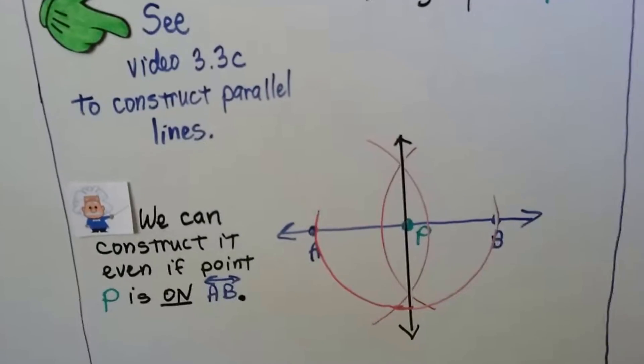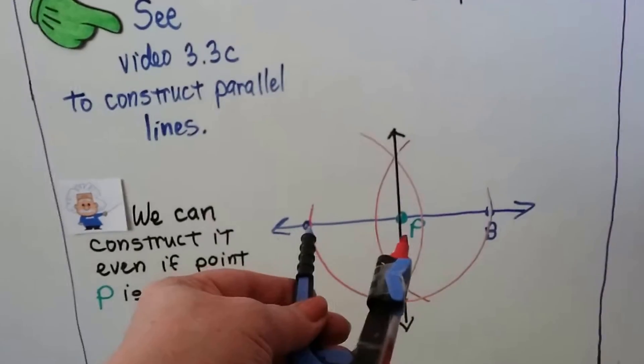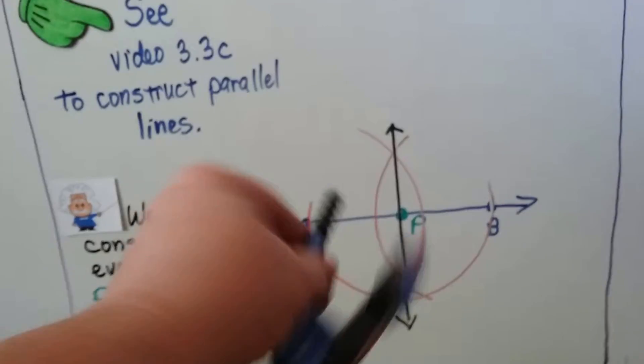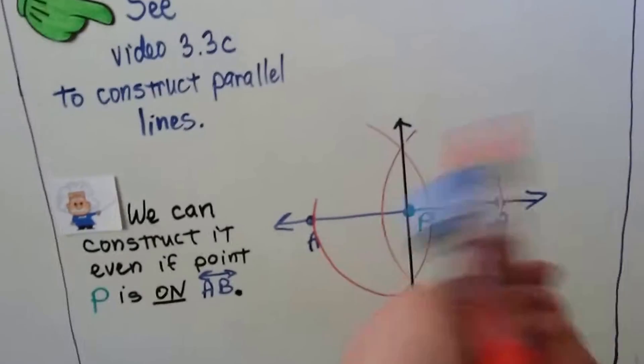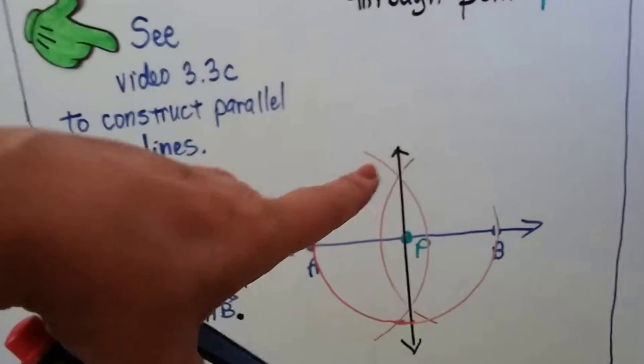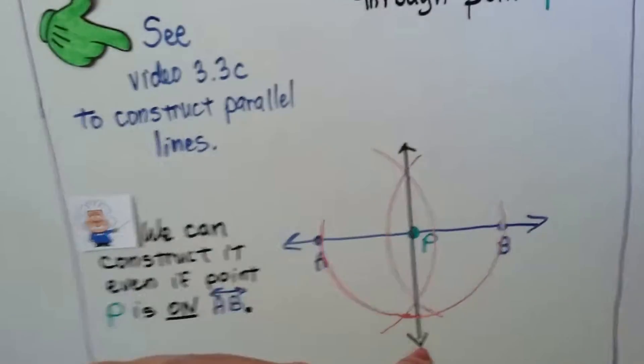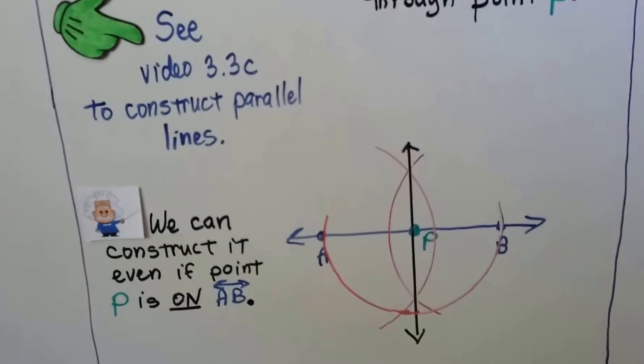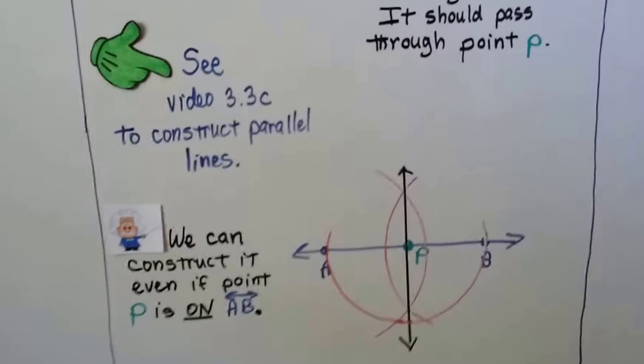We can label them. Then we can put our compass on A and make a big arc, put it on B and make a big arc, and where the two big arcs intersect, we use a straight edge to draw a line straight through it and we made a perpendicular line.